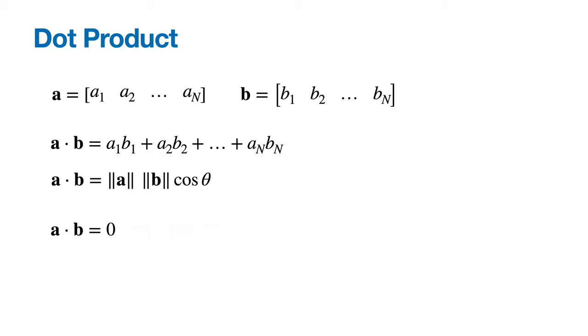Looking at this definition, how could it be possible that a dot b equals zero? Well, either one or both of the vectors has length zero, or cosine of the angle between them is zero, which means the angle between them must be 90 or 270 degrees, in other words, they must be perpendicular.